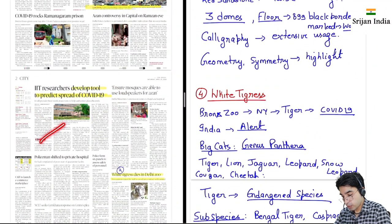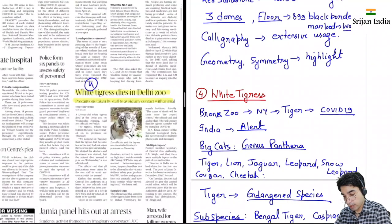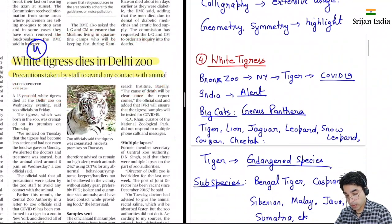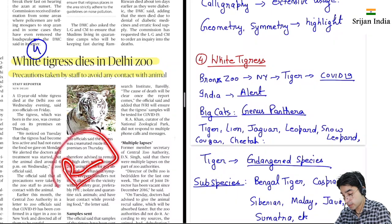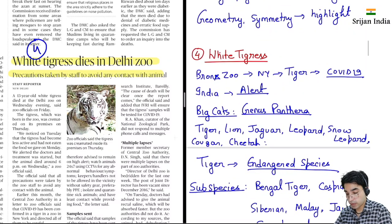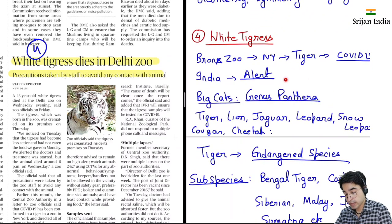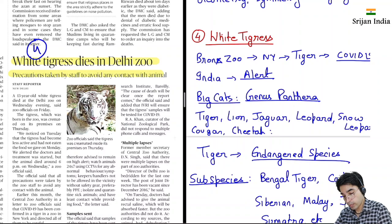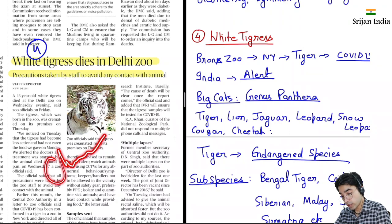IIT Delhi mein researchers ne ek naya tool develop kiya hai to predict spread of COVID-19. Yahan ek white tigress ka death hua hai Delhi Zoo mein. Pehle ek Bronx Zoo hai New York mein — wahan pe tiger ko COVID-19 ho gaya tha, toh India mein bhi kaafi alert ho gaya. India mein Bengal tigers ki kaafi badi population hai. Yeh kehlate hai big cats — genus Panthera se belong karti hai. Big cats mein majority mein tiger, lion, jaguar, leopard, snow leopard aata hai. Broader term mein cougar, mountain lion jo America mein milta hai, cheetah bhi aata hai. India mein cheetah extinct ho gaya hai — wild mein cheetah ko hum reintroduce karne ki baat kar rahe hai.